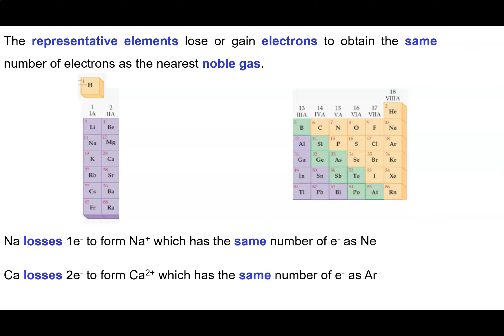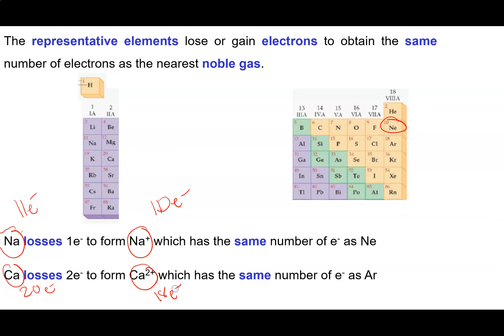We know that atoms like to lose or gain electrons until they obtain a noble gas configuration — in particular the configuration of the nearest noble gas, because that requires the smallest loss or gain of electrons. Sodium has 11 electrons and if it loses one to form a sodium cation it will have 10 electrons, the same as neon, its nearest noble gas. Calcium has 20 electrons; it likes to lose 2 electrons and form the calcium 2+ cation, which has 18 electrons — the same as argon, the noble gas nearest to it.